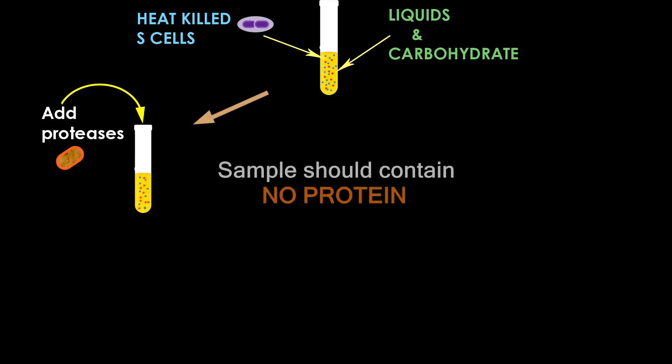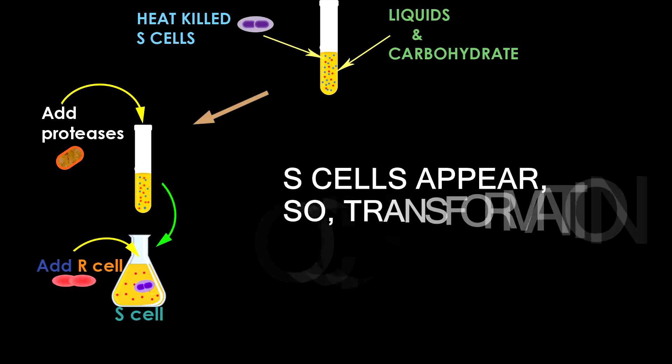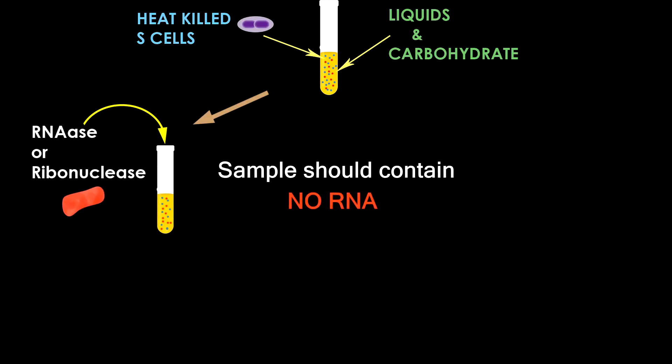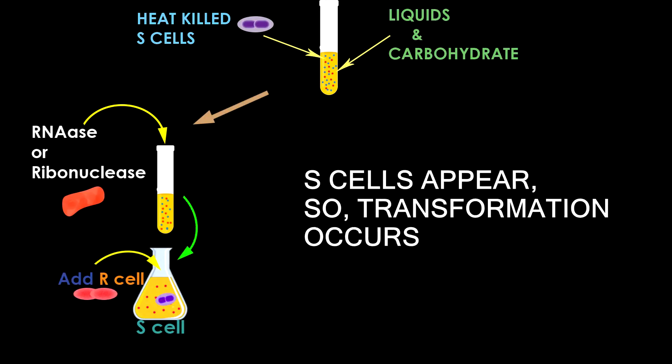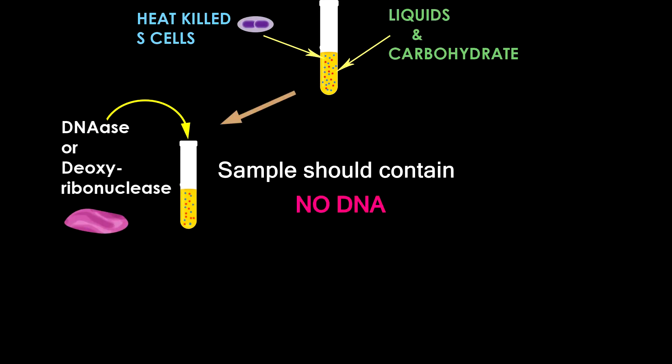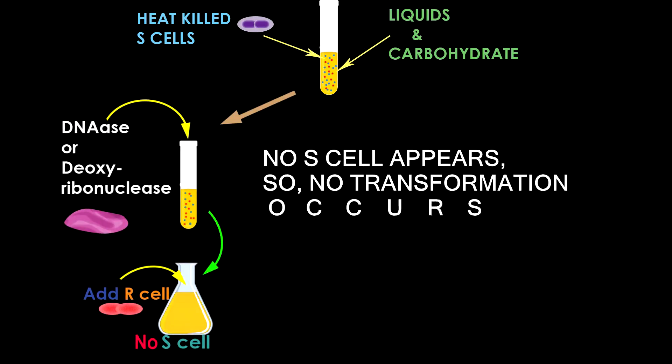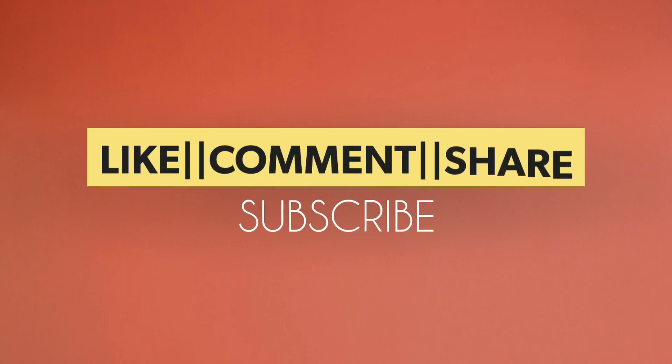They performed the experiment through an in vitro process. They found that when they used protease, or protein-digesting enzymes, it didn't affect transformation. When they used RNase, or RNA-digesting enzymes, it also didn't affect transformation. But when they used DNase, or DNA-digesting enzymes, it inhibited transformation. Thus they concluded that DNA is the genetic material. In my next video I will discuss the Hershey-Chase experiment.